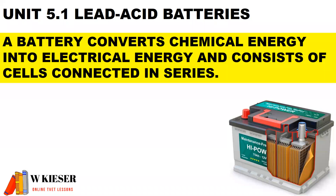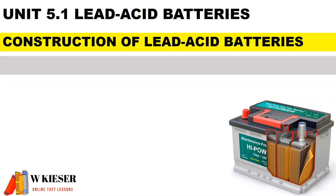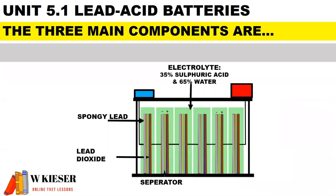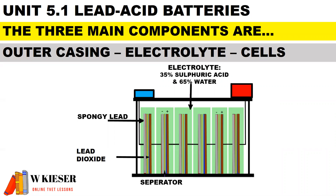In terms of the operation or the function of a battery, a battery converts chemical energy into electrical energy and consists of cells connected in series. In terms of the construction of lead acid batteries, there are three main components: the outer casing, electrolyte, and cells.